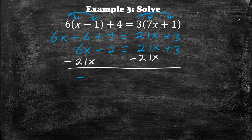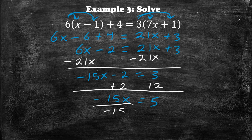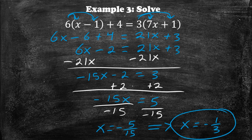What we end up getting is negative 15x minus 2 is equal to 3. Continuing, we add 2 to both sides, giving us negative 15x is equal to 5. Since negative 15 is being multiplied by x, we divide both sides by negative 15, and we get x is equal to negative 5 over 15. We can simplify that further to get x is equal to negative 1 third. That is our final answer.